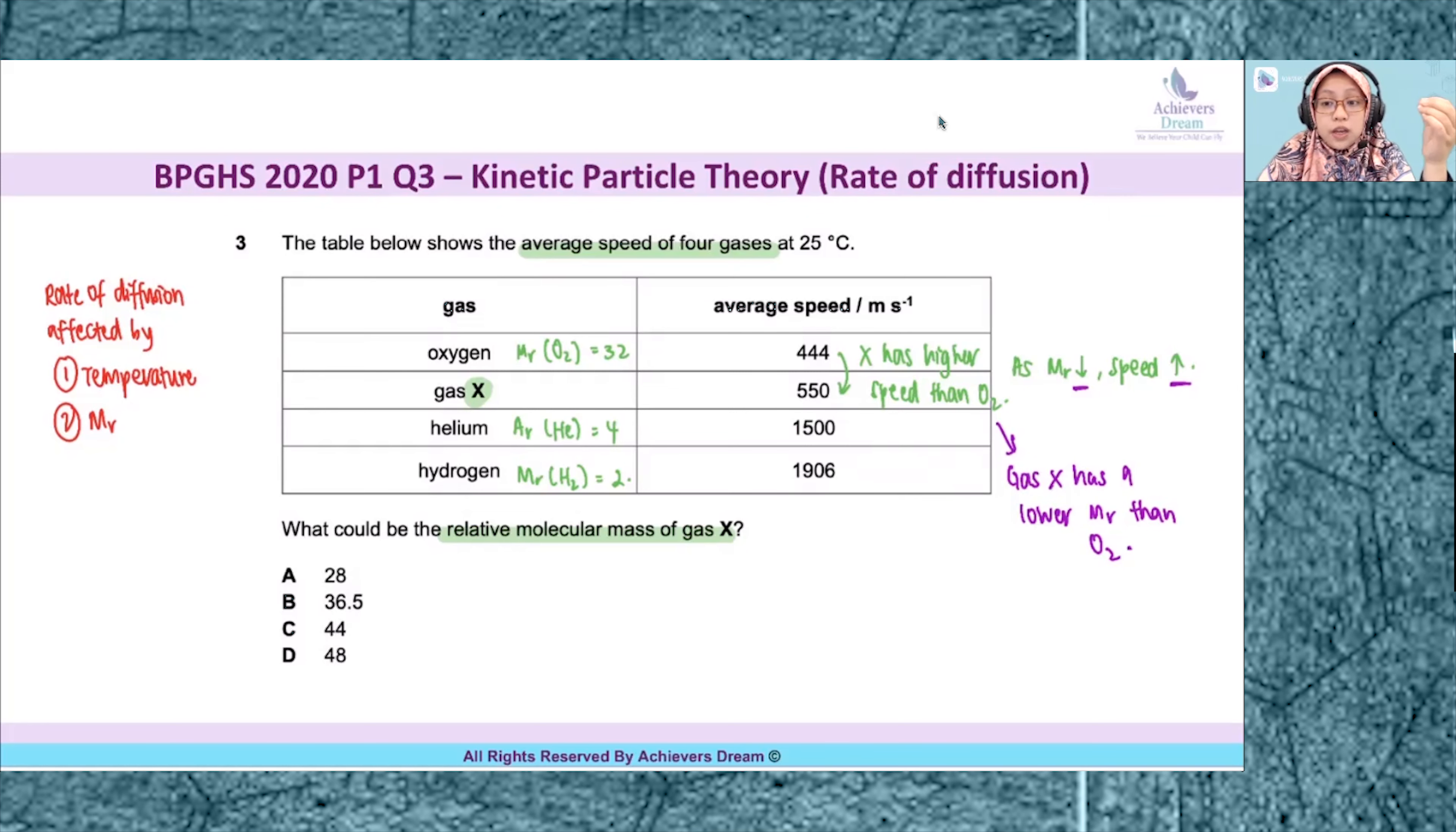When you look at the options, the only option that has a value lower than 32 is 28, option A. So your answer is A.